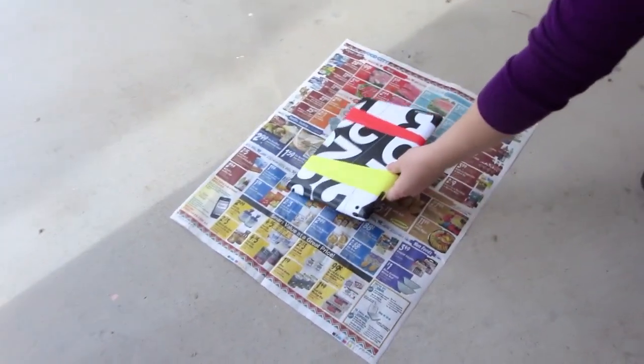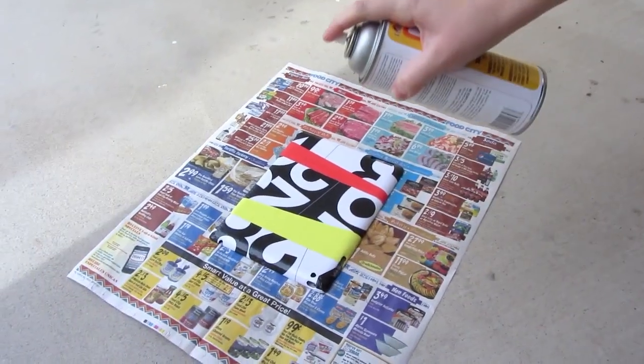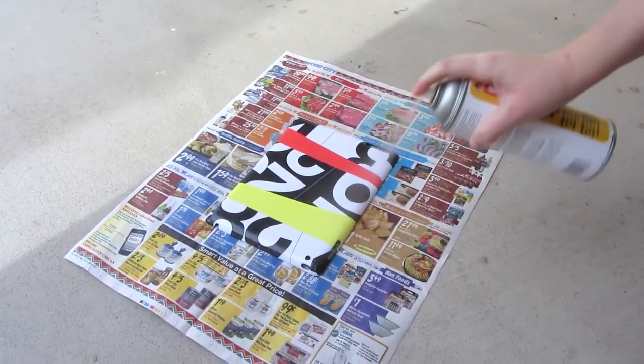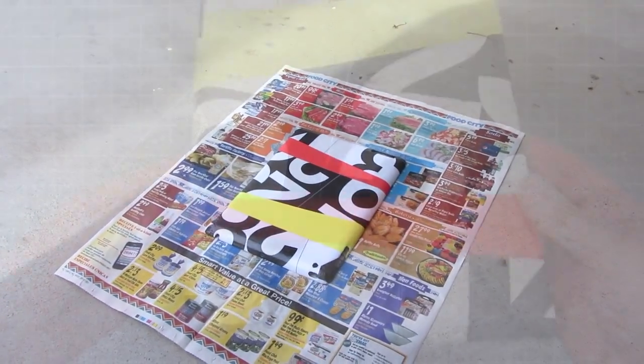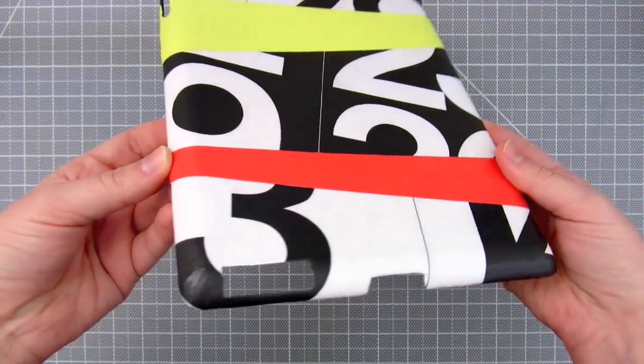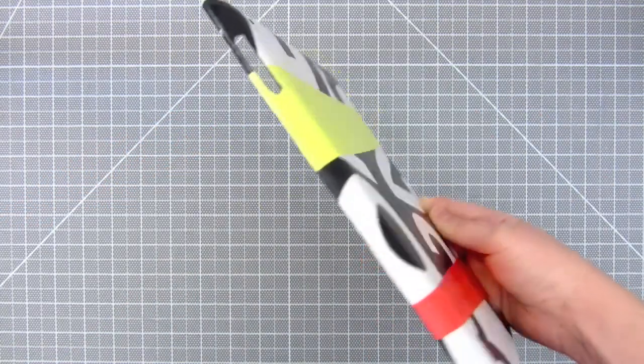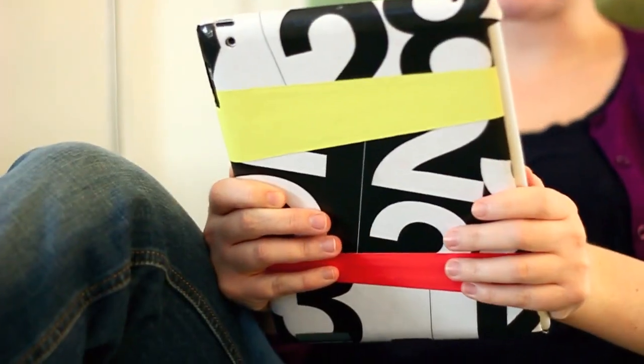Follow the directions on the spray and apply about three coats. Allow 15 minutes to dry between each coat. After it's all dry, then you can pop in your iPad and enjoy your fancy new case. I hope you enjoyed this tutorial.